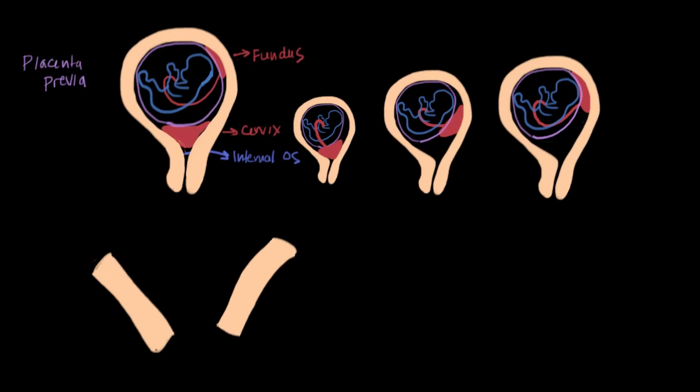So we already talked about the structure of the placenta in another video called Meet the Placenta. So over here, we're just briefly going to gloss over it. So this is the uterus, or rather it's the wall of the uterus. And the uterus is a muscle, right? It's a muscular organ.